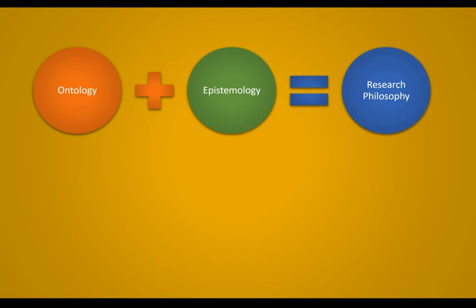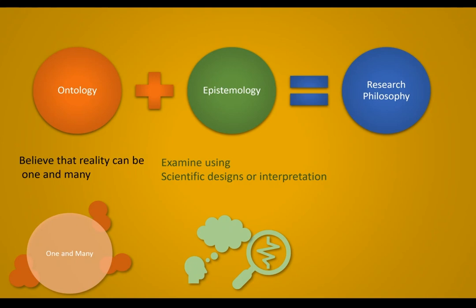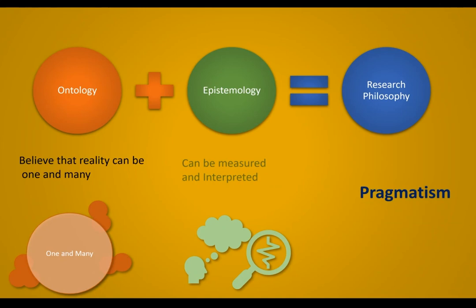The third belief is that the reality can be one and many, and the epistemological approach is that it can be examined or interpreted — meaning it can be measured or interpreted, with both options available. We can use whatever the best tool available for the situation. In that case, we are using a pragmatism approach. Pragmatism deals with the situation where the ontological belief is that reality can be one and many, and the knowledge can be measured or interpreted.